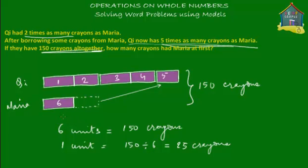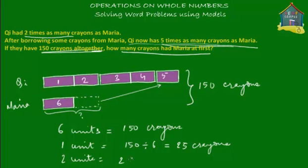But that's how much Maria is left with now — the question asks how many crayons she had at first. At first, she had two purple blocks, so she had two units. Two units means two times 25 crayons, which equals 50 crayons. So the answer is: Maria had 50 crayons at first.